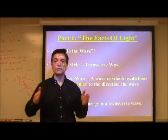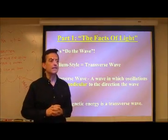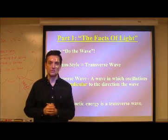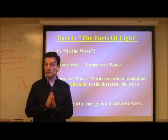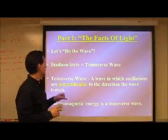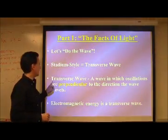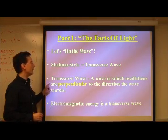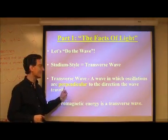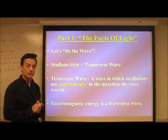We get this traveling disturbance. What I hope you'll note is that we can define a wave — any wave — as a traveling disturbance. There are different kinds of traveling disturbances, different kinds of waves. Light tends to be a transverse wave, which we can define as a wave in which oscillations are perpendicular — and that's the critical word — perpendicular to the direction the wave travels.